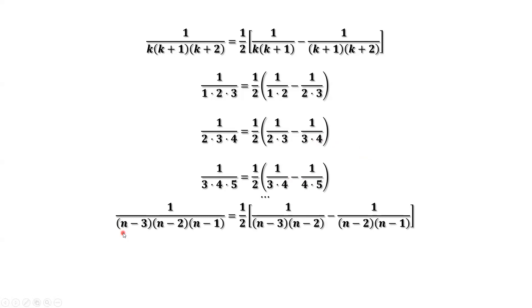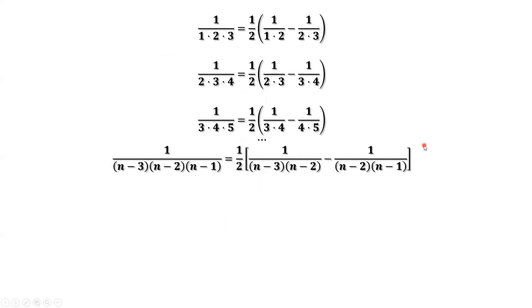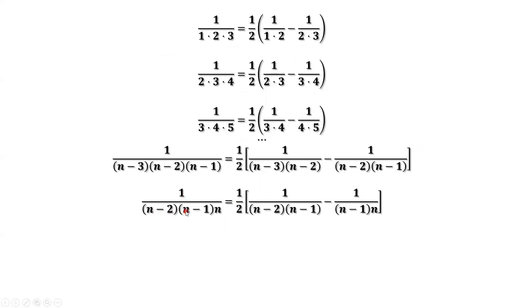Continuing, if the product involves n minus 3, n minus 2, n minus 1 — those three consecutive numbers — we can also apply this result. The product of the first two numbers appears here, and the product of the last two numbers is n minus 2 times n minus 1, minus 1 over the product of the last two terms, which is n minus 1 times n.